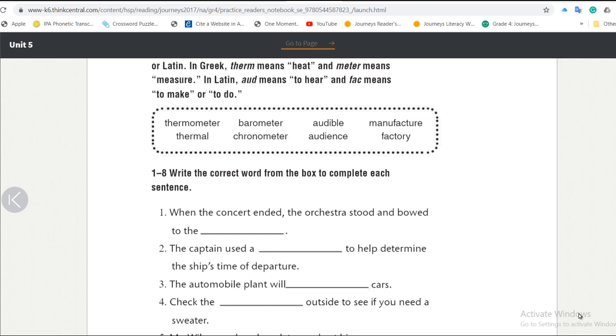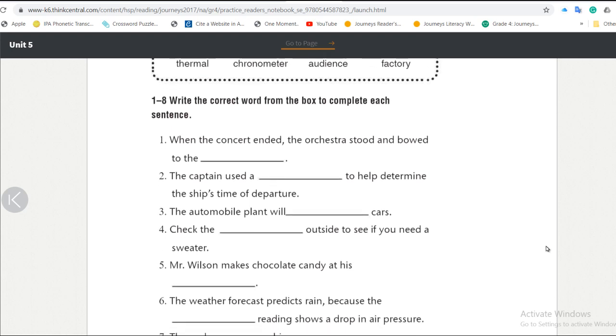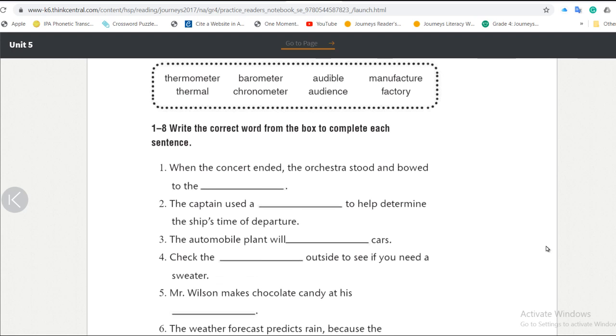We want to use these words in the sentences below. So let's read the first three sentences together and try to find the answer with me. Number one, when the concert ended, the orchestra stood and bowed to the... I can hear somebody here who's saying audience. Yes, exactly. When the concert ended, the orchestra stood and bowed to the audience. Amazing. This is just perfect.